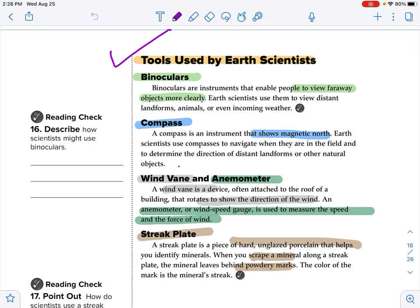A compass. And that's going to show direction there, showing the magnetic north. You're going to be able to use that to navigate if you are out in the field and to determine the direction that something is. A wind vane anemometer. A wind vane is a device. It is attached to the roof of a building that rotates to show the direction of the wind. Sometimes they'll be on the top of a barn, and it might even look like a barn, or sometimes it looks like a rooster, or something with an arrow that's going to spin and show the direction of that wind. But the measurement of it, an anemometer or wind speed gauge, is used to measure the wind and the force of the wind.